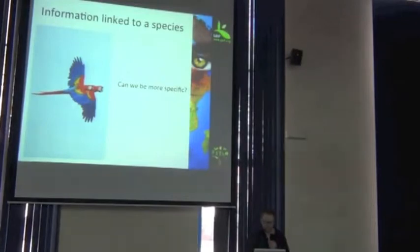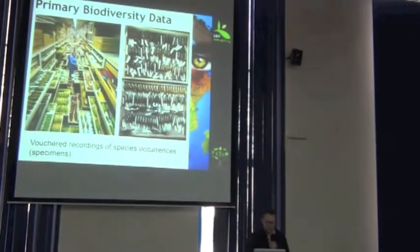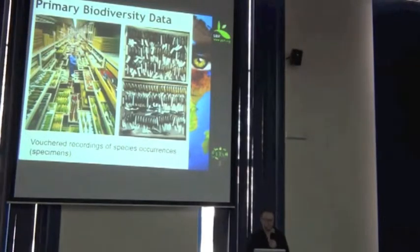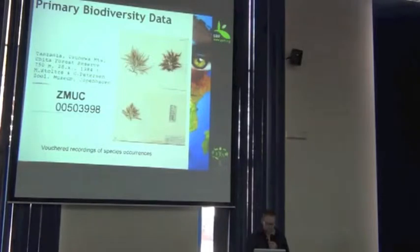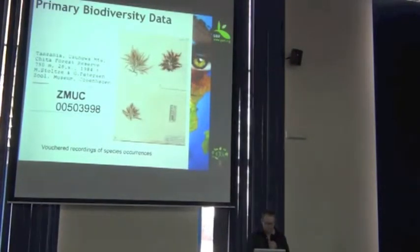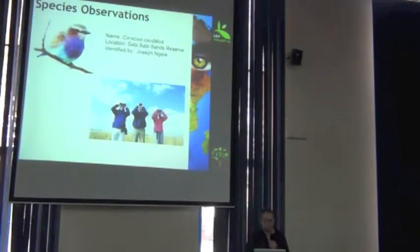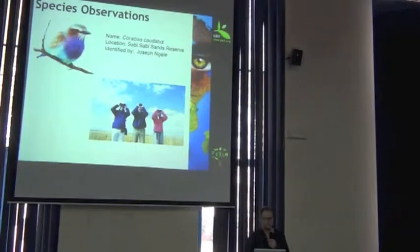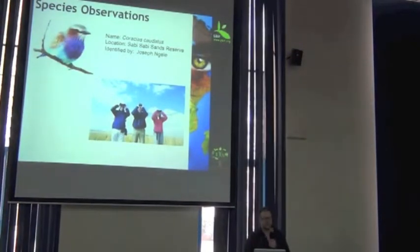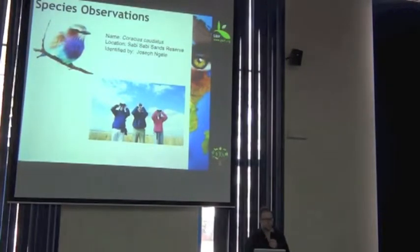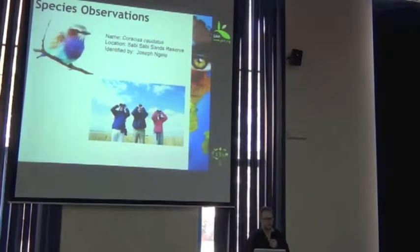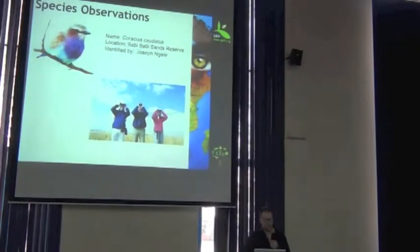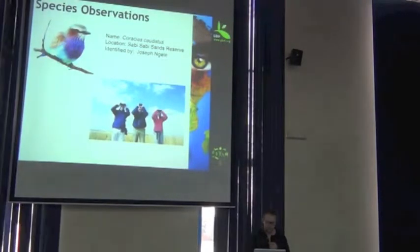Let's quickly go through some of the different types. Private biodiversity data — it could be voucher specimens or species occurrences. I'm sure many of you have specimen information. Here's one example from the Zoological Museum in Copenhagen. It could also be a species observation. Are there any bird watchers in the room? So, imagine you're out in the field and you see a beautiful species of bird, and you record what it is you saw, where you saw it, when you saw it.